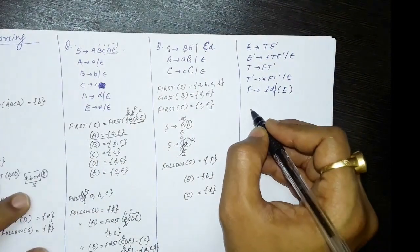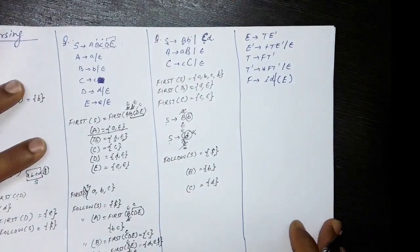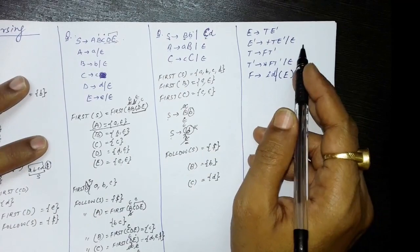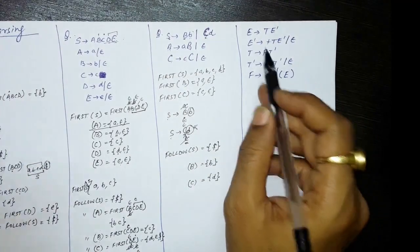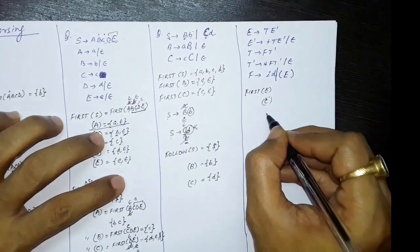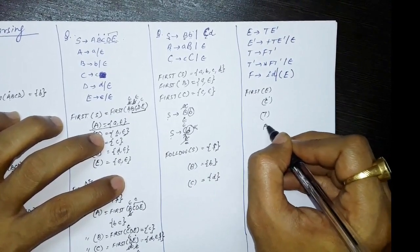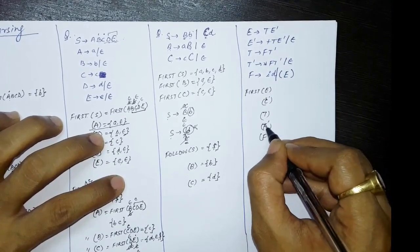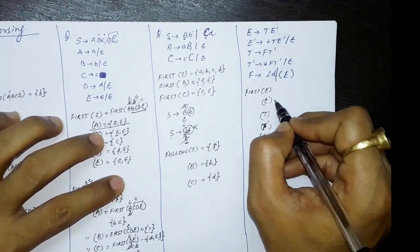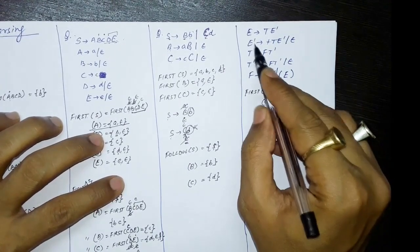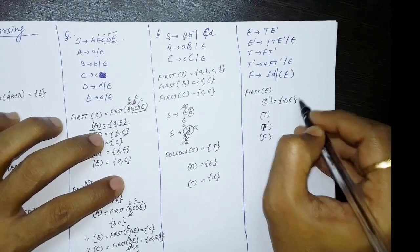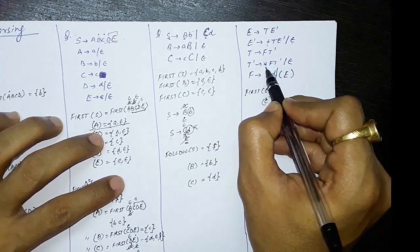Now let's find FIRST and FOLLOW for the classic expression grammar, which is a potential exam question. We have E produces T E', E' produces plus T E' or epsilon, T produces F T', T' produces star F T' or epsilon, and F produces ID or opening parenthesis E closing parenthesis. For the easier symbols: FIRST of E' contains plus and epsilon; FIRST of T' contains star and epsilon.